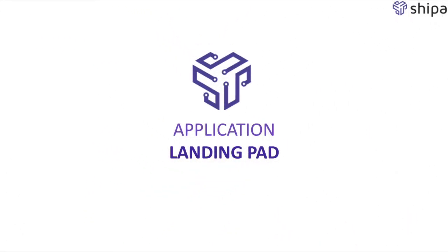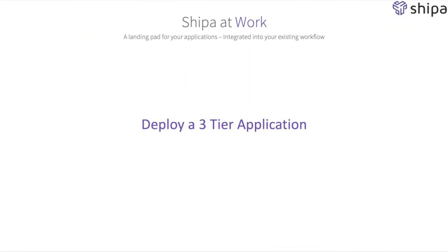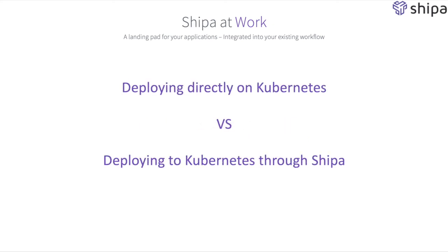In this video we'll talk a bit more about the process of deploying an application on Shippa. We'll be deploying a simple three-tier application — one that needs a web server, application code access, and database access. We're also going to be covering some of the differences between deploying an application directly on Kubernetes versus deploying the same application through Shippa on Kubernetes.